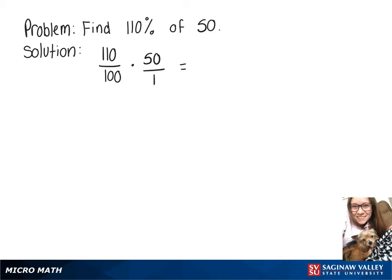On top, 110 times 50 will give us 5,500. On bottom, we'll have 100, and then simplifying that gives us 55.